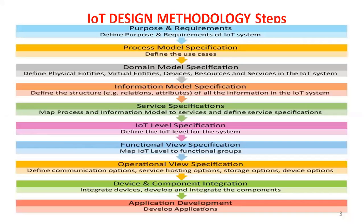The first step is purpose. Here, you define the purpose for which you are designing the IoT system. The purpose may be, for example, home automation or smart cities — for example, smart lighting. Coming to the requirements, they may include different requirements: hardware requirements and software requirements for designing any IoT system.